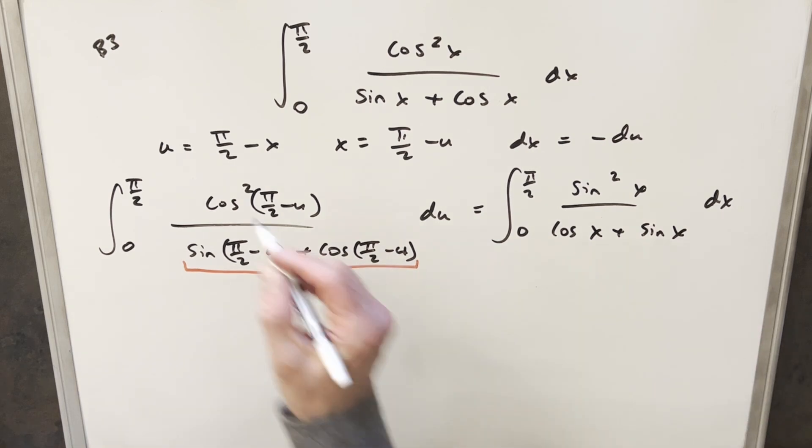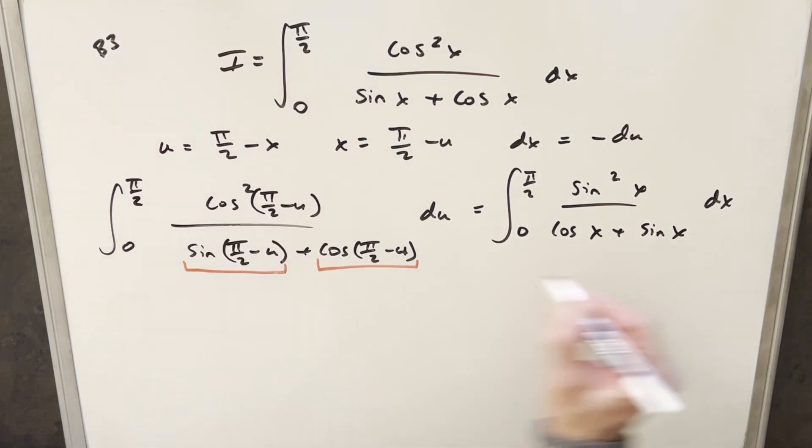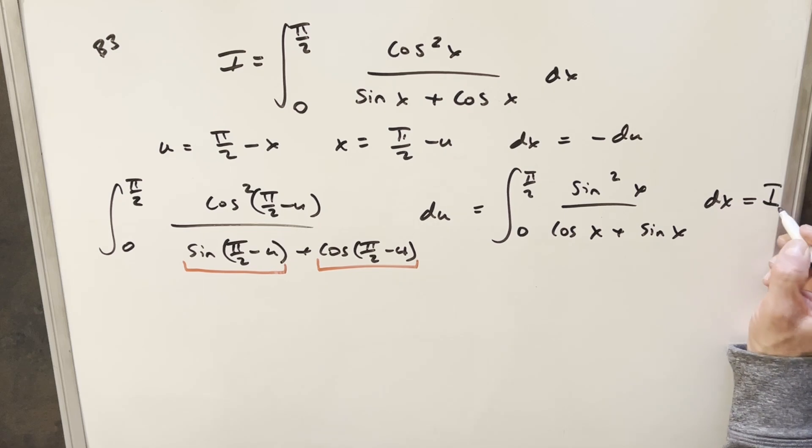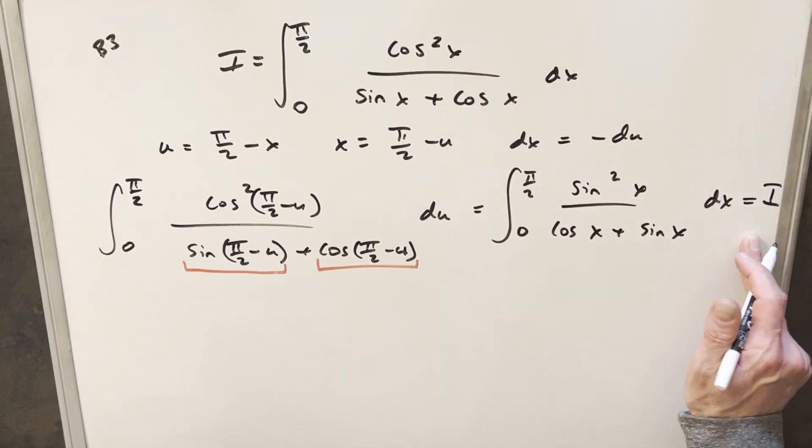Then from here, what I'm going to do, I'm just going to name, we'll call our original integral I. And so this thing is still I. And we'll add this copy to this copy and see what happens.